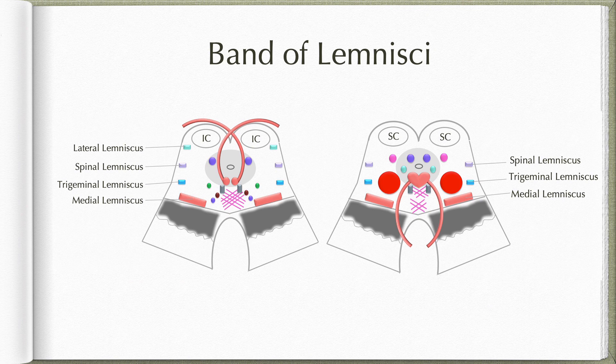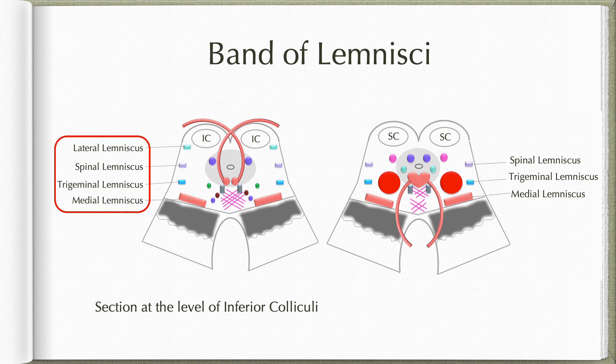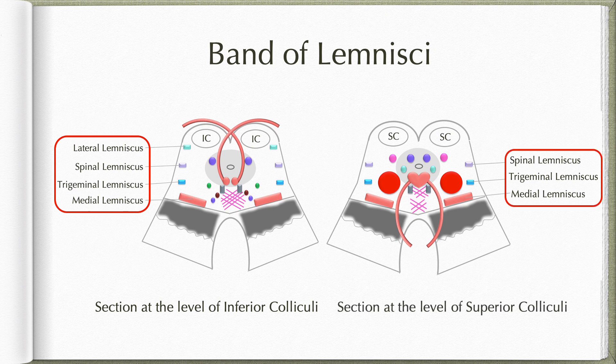Coming to the tegmental region of the midbrain, we find the band of lemnisci here. At the level of inferior colliculi, we find all four lemnisci: medial lemniscus, trigeminal, spinal, and lateral lemnisci. The same four found in pons, but in pons these lemnisci were arranged mediolaterally; here the arrangement is more ventrodorsal. But at the level of superior colliculi, we only find medial, trigeminal, and spinal lemnisci. Lateral lemniscus is not found at this level because its fibers would have terminated by relaying in the inferior colliculus at the lower level.